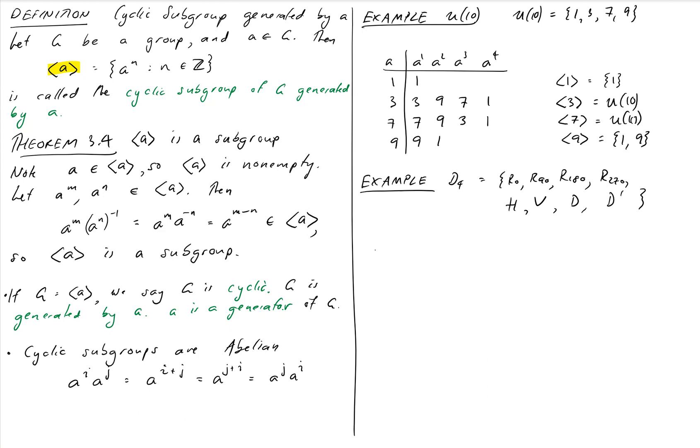If I want to take the cyclic subgroup generated by R0, well I rotate by 0 and then do it again, all I get is just itself so that's just going to be {R0}. If I took the cyclic subgroup generated by R90, once is R90, do it another time I get R180, do it a third time I get R270, and a final time and I get back to R0. If I were to do it again I'd be back to where I started and I'd loop around.